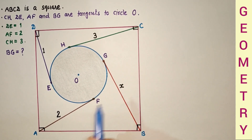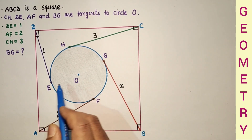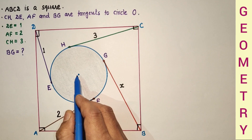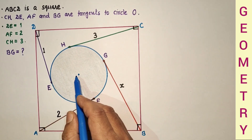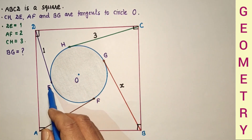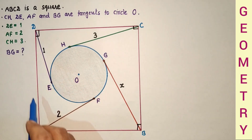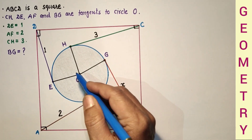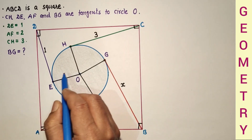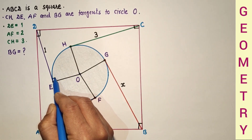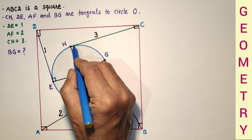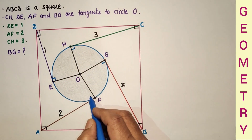Let us start solving. If we join all the points of contact to the center of the circle — OE, OH, OG and OF — all are radii and will be perpendicular to the tangents at the point of contact. So I have joined OE, OH, OG and OF. The radius and tangent at the point of contact will be mutually perpendicular. So this angle is 90°, this is 90°, this is 90°, and this is 90°.